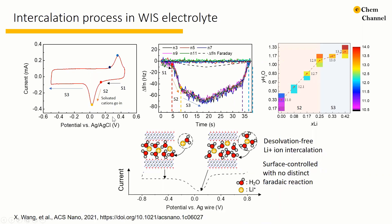Then what exactly is this process like? Electrochemical quartz crystal microbalance was performed to in-situ monitor the mass change of the electrode, and density functional theory simulations were performed to quantitatively correlate the change in d-spacing with the intercalated species. It is very clear that the mass change of the electrode can be divided into three stages. Stage one is where almost no water accompanies the inserted lithium. At stage two, a dramatic increase in the amount of inserted water was observed, corresponding to 2.85 water molecules per intercalated lithium.